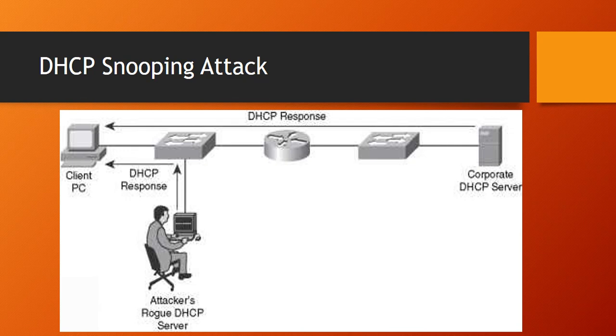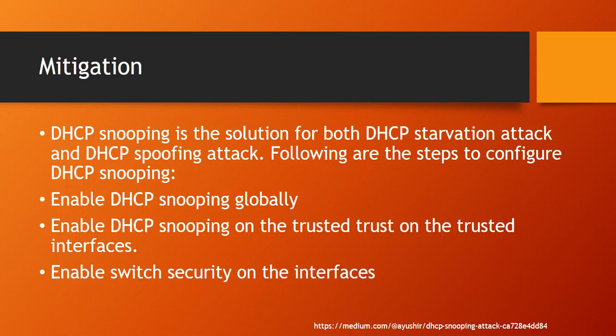On the other side, the real DHCP server cannot work properly. So how do we mitigate this kind of attack? One solution that is simple and easily configured on Cisco networks is the DHCP snooping command. DHCP snooping is a solution for both DHCP starvation and DHCP spoofing attacks. We enable DHCP snooping globally, then add the trusted port for the legitimate DHCP server, and optionally add port security to the switch.